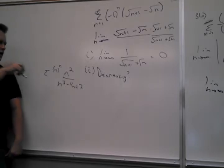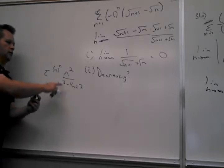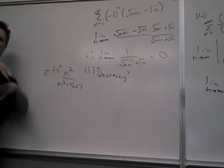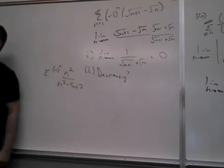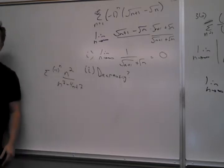So you could just say I'm going to test conditional. Absolute won't work — it's trying to be one over n, that's divergent.